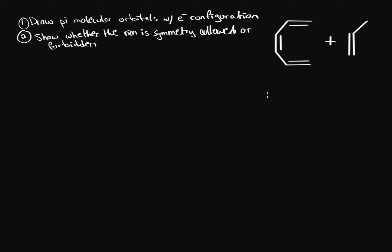To start off, we need to figure out how many carbons are in a conjugated system — where they have conjugated double bonds like these. For hexatriene, we have 1, 2, 3, 4, 5, 6 carbons that are conjugated. That means we have 6 pi orbitals.